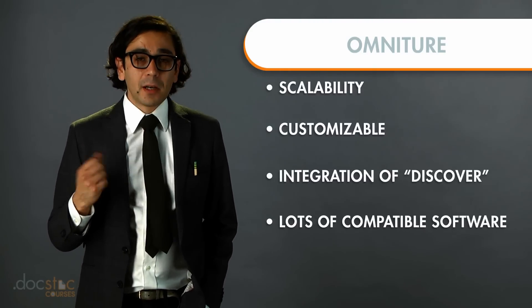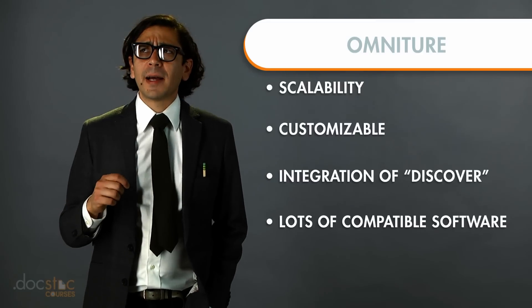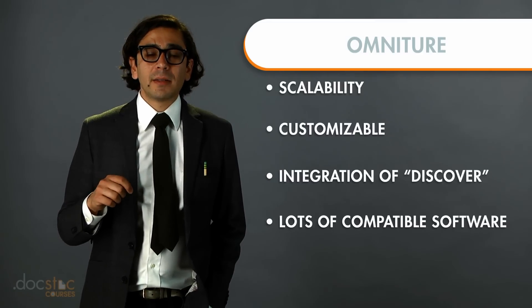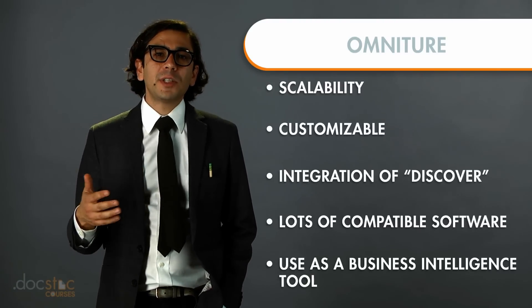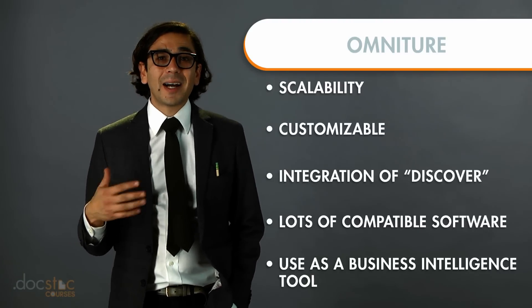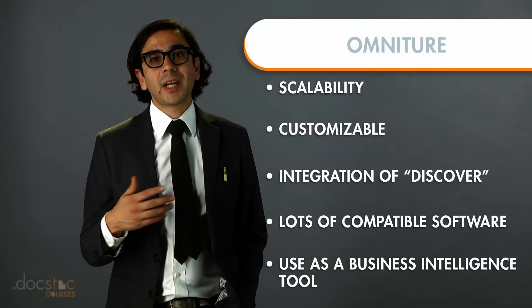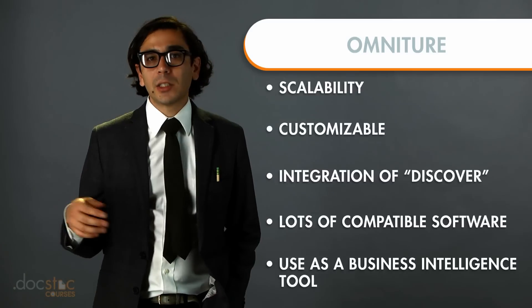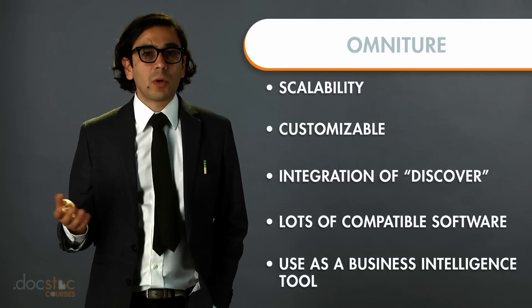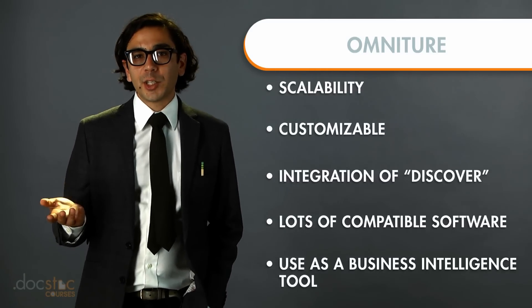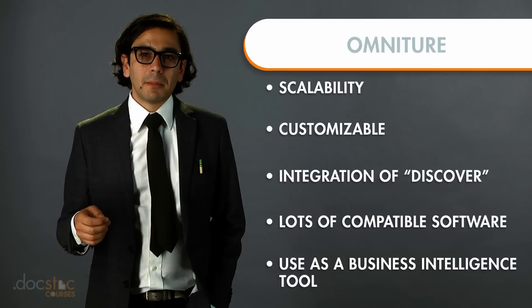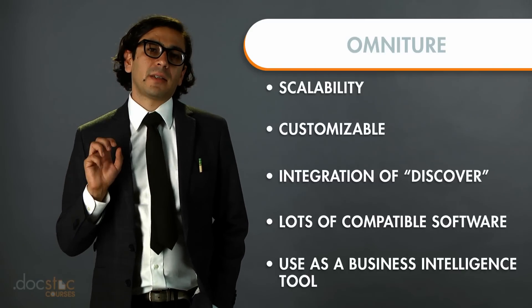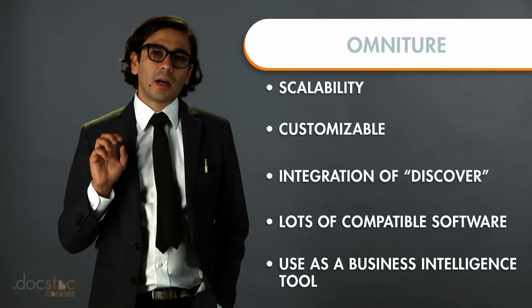Another advantage of Omniture is that you can schedule reports and basically use it as a BI tool available to your entire organization. That means dashboards, widgets, and automated reports. It's more business-centric than Google Analytics is, by far.